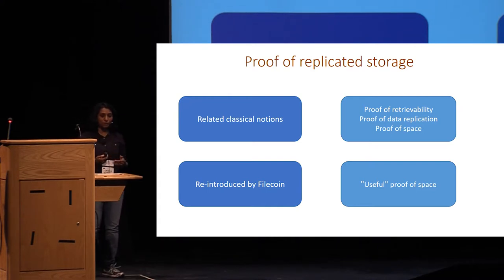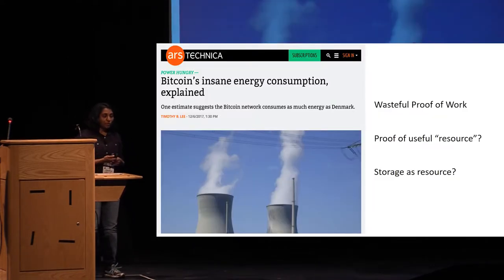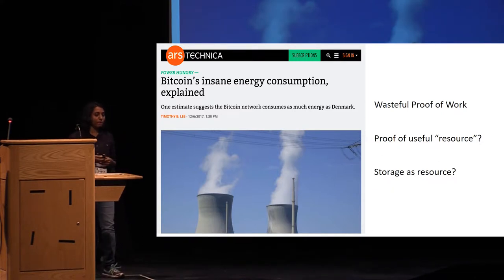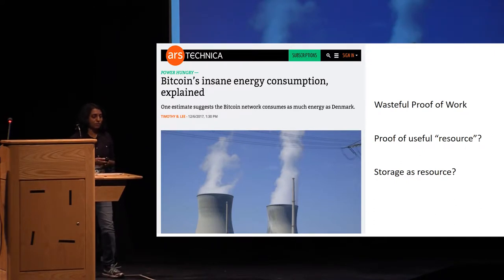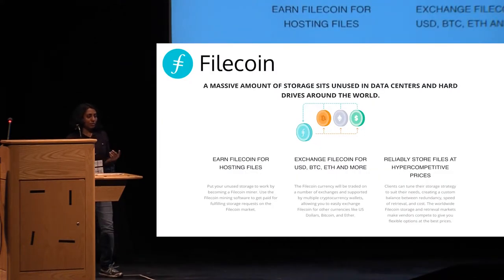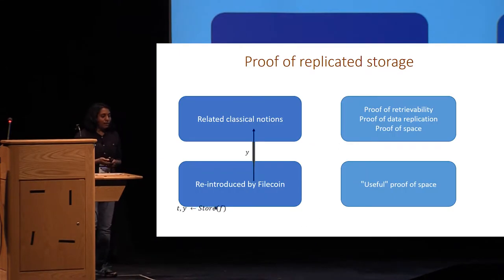I'll say a little bit about why these notions don't solve our problem and how they are different. Bitcoin uses a proof of work as a method to deal with Sybil identities, and this is known to be largely wasteful. The question is, can we instead use a proof of useful resource in place of work? Filecoin proposes to use storage as this resource, which should allow one to have a distributed storage network where miners dedicate storage to store useful files instead of dedicating work. This gives useful proof of space, but I'll say why that doesn't solve our problem later.